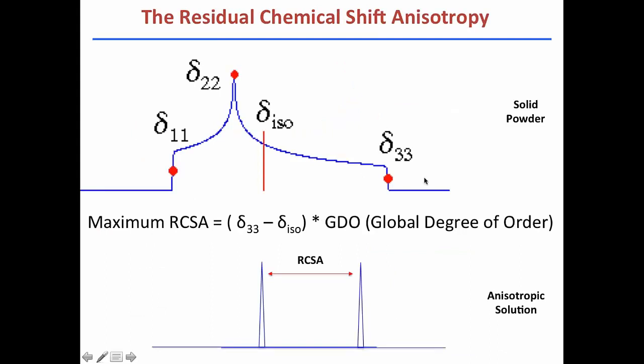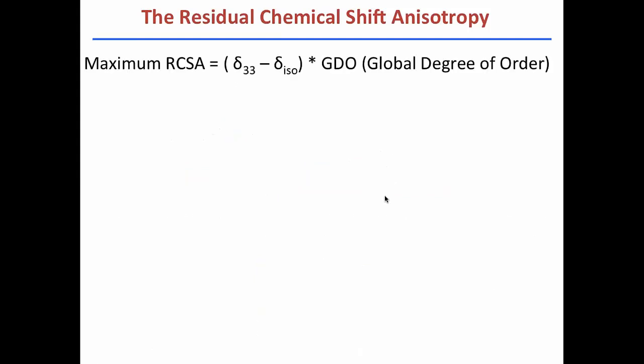What is the maximum value of these residual chemical shift anisotropy? The maximum value is, if we look at the center here, this distance. So this distance will be sigma 33 minus sigma iso. But in an anisotropic condition, for example, a gel, we need to consider the global degree of order. So if the order is just 1 in 1000, then that value is 10 to the negative 3. So in order to see what will be the maximum value that we should expect, it's pretty simple. That is the equation.